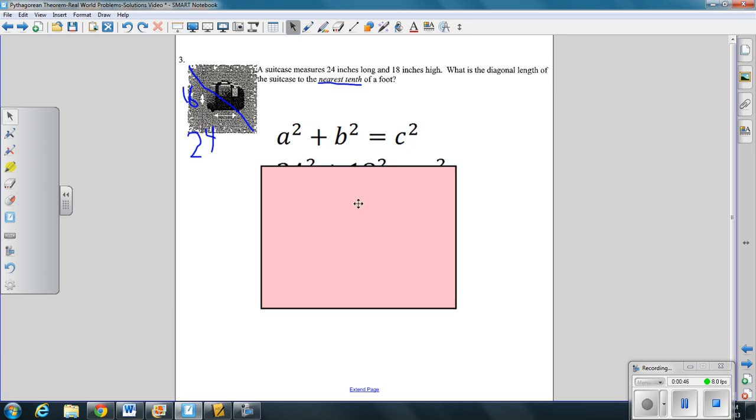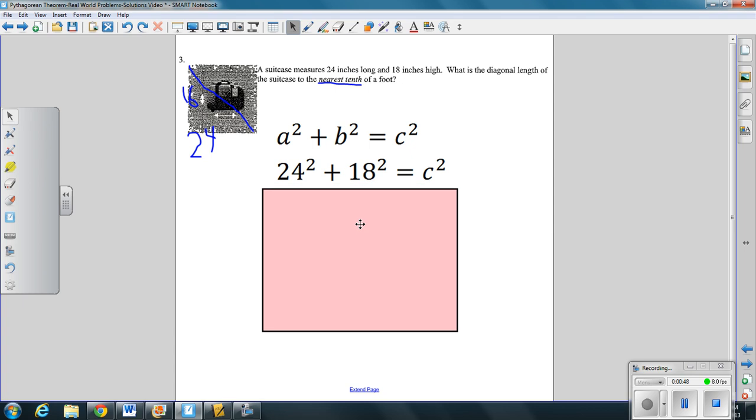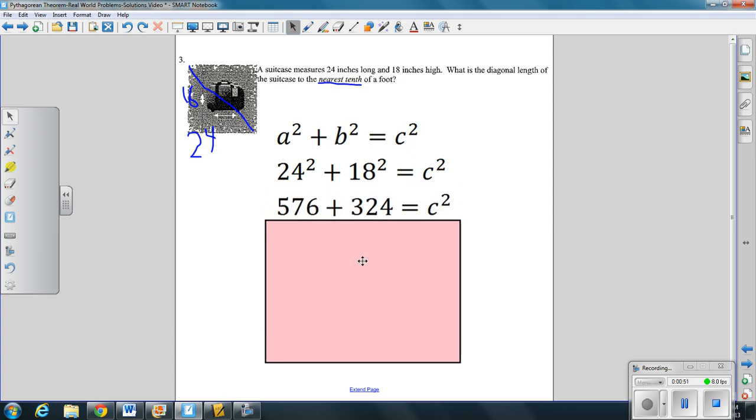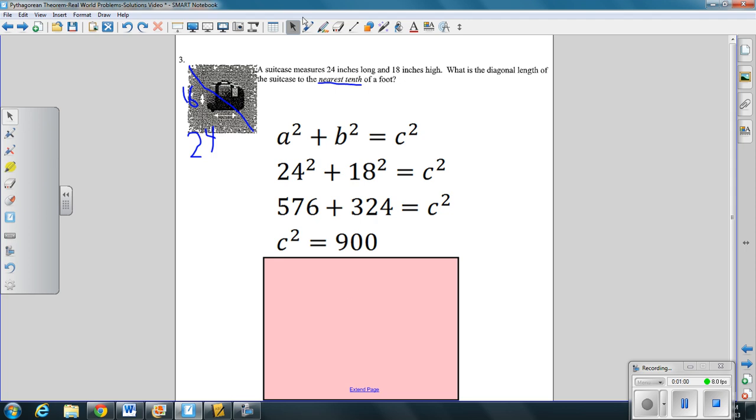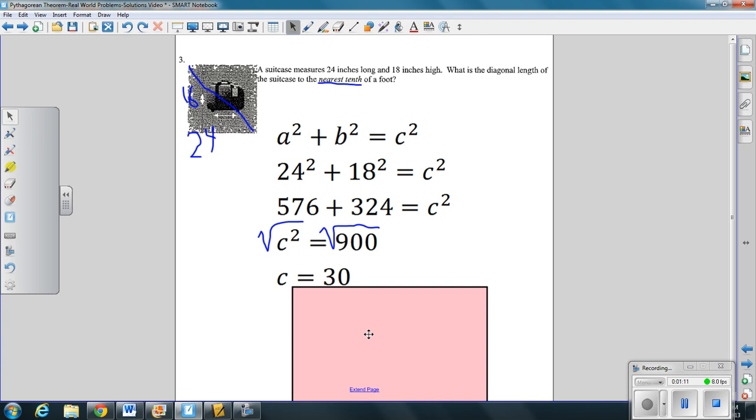We start with the Pythagorean Theorem. Substitute A and B with 18 and 24. Square those two numbers to get 576 and 324. Add those up to get 900. We will take the square root of both sides. Because the opposite of squaring is square rooting, and the square root of 900 is 30. So what does that mean? The diagonal on the suitcase from corner to corner is 30 inches in length. Any questions? Raise your hand. We can pause the video.